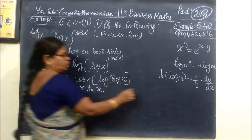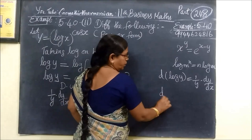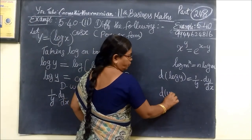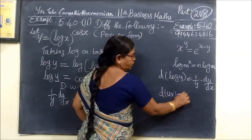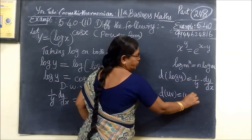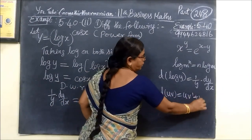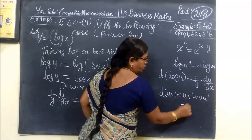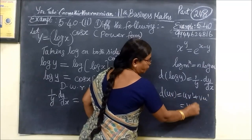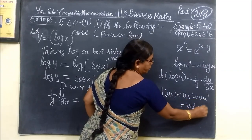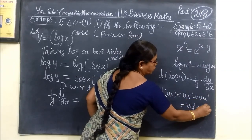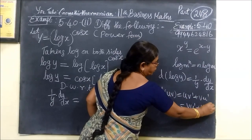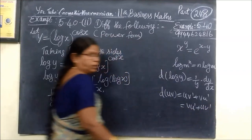Now this method is the uv method. d of uv — what is d of uv? It is v·u dash plus u·v dash, or v·u dash plus u·v dash.